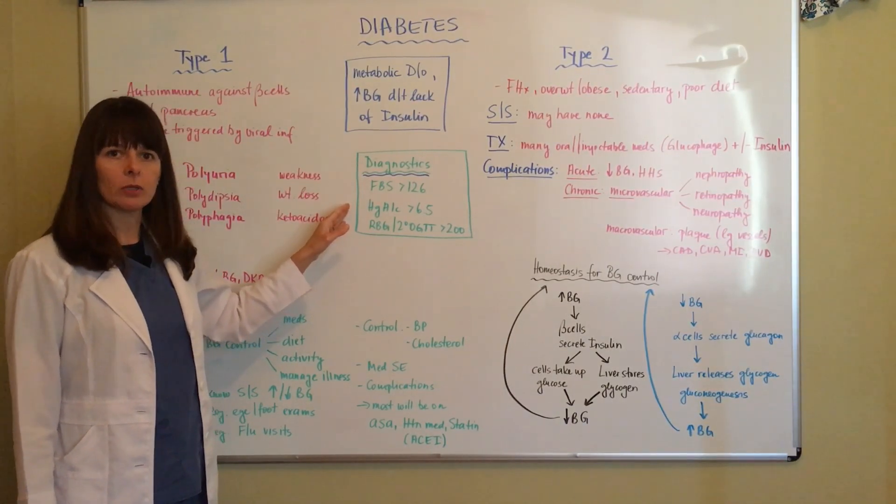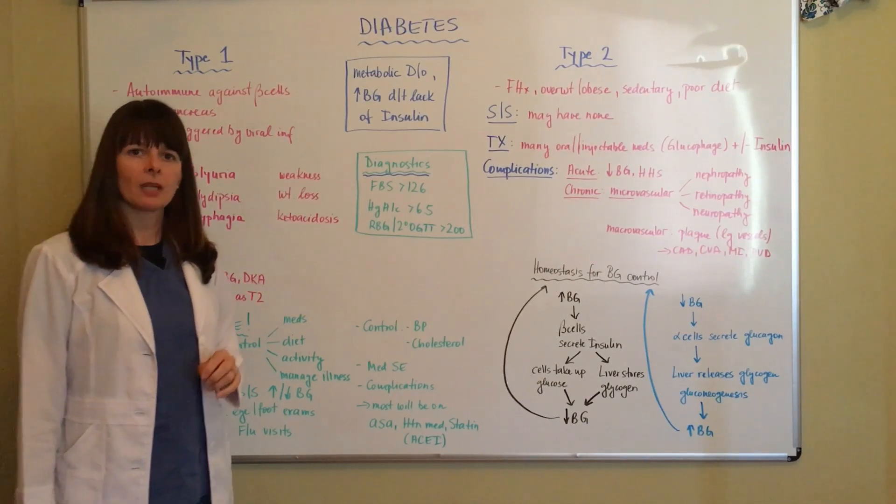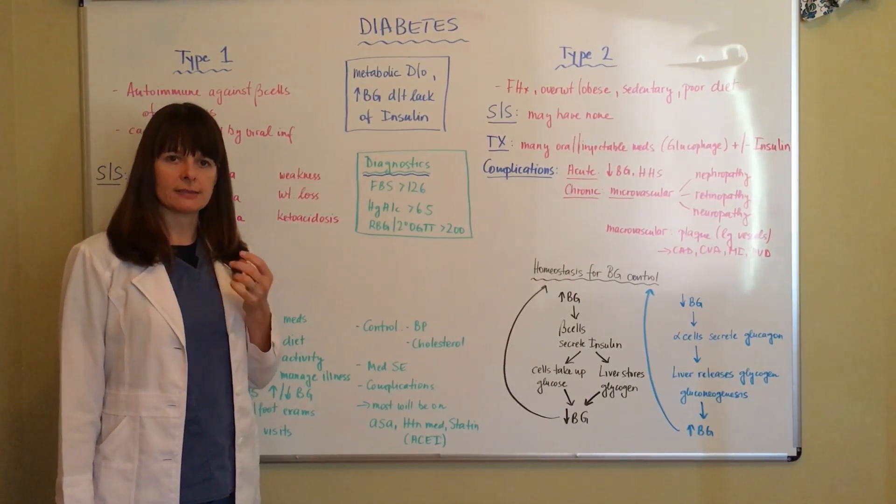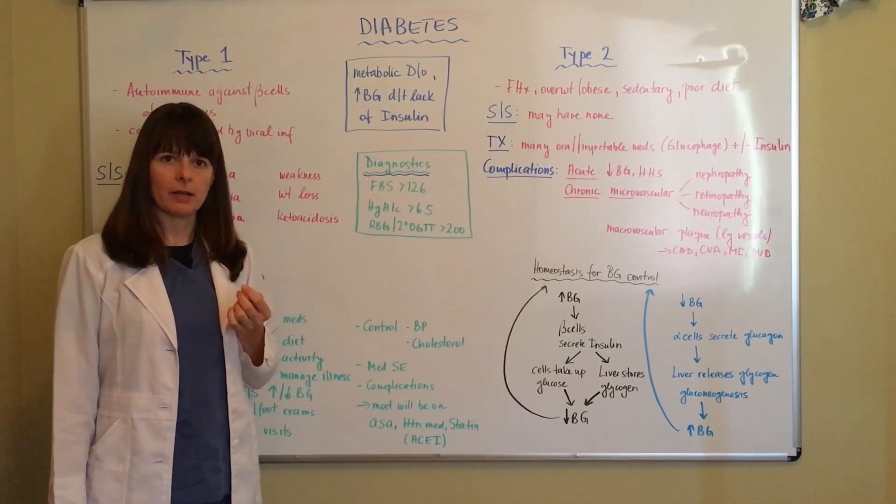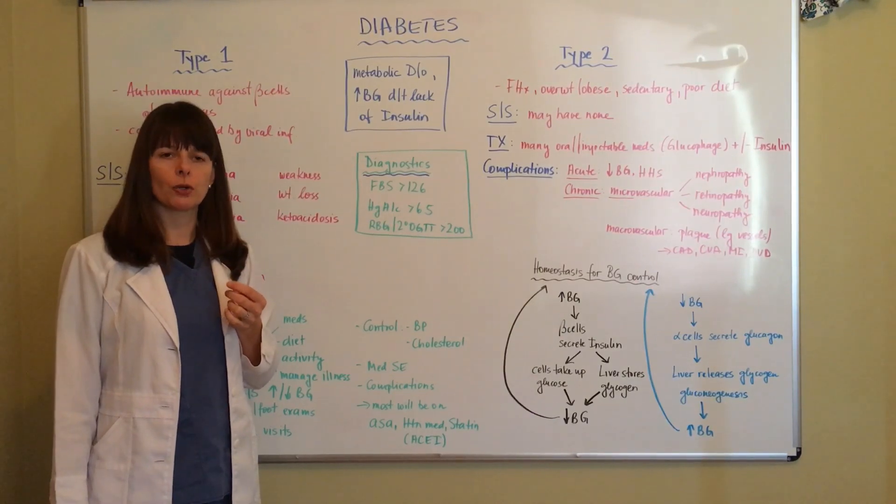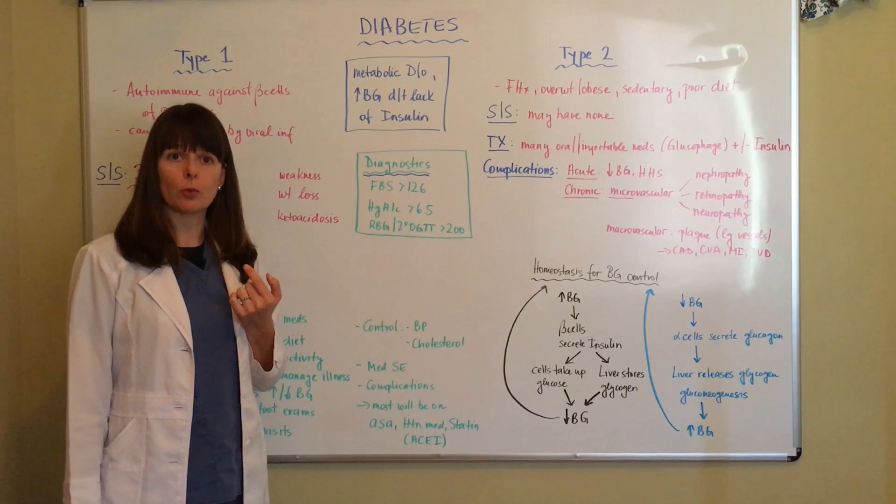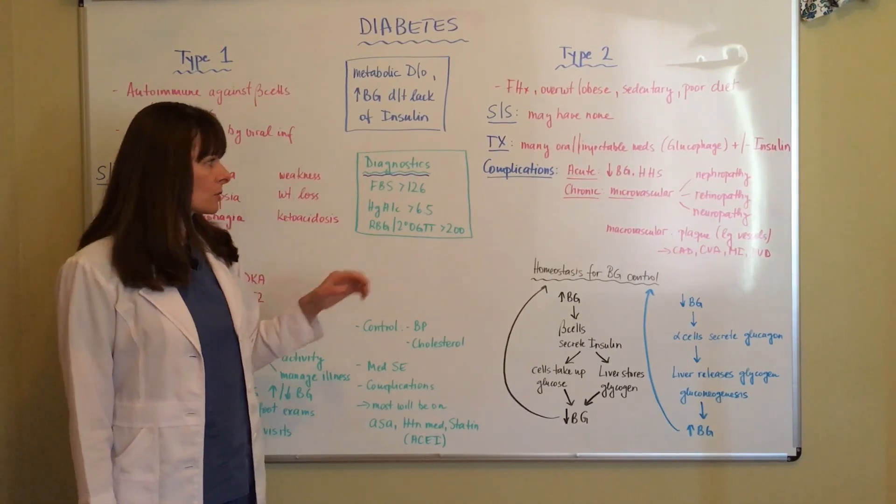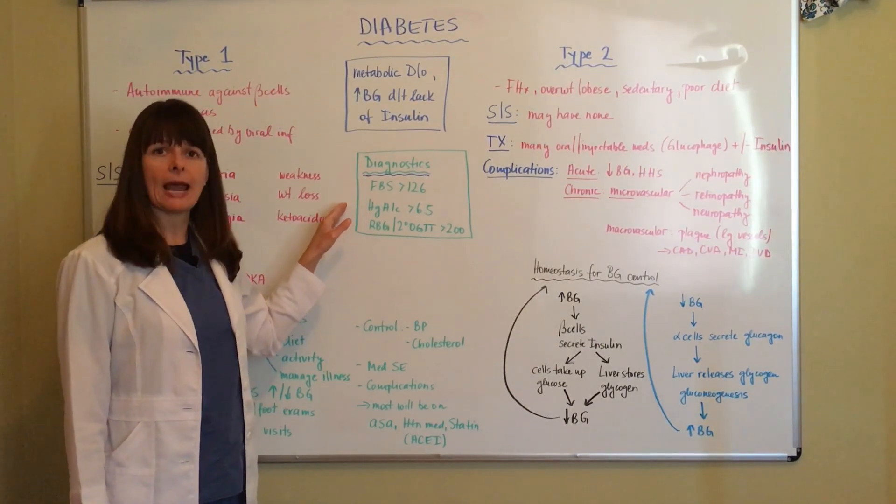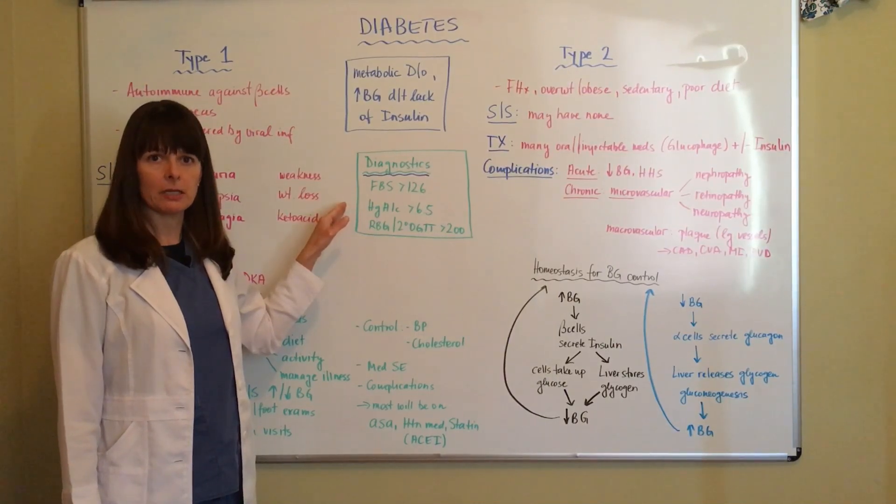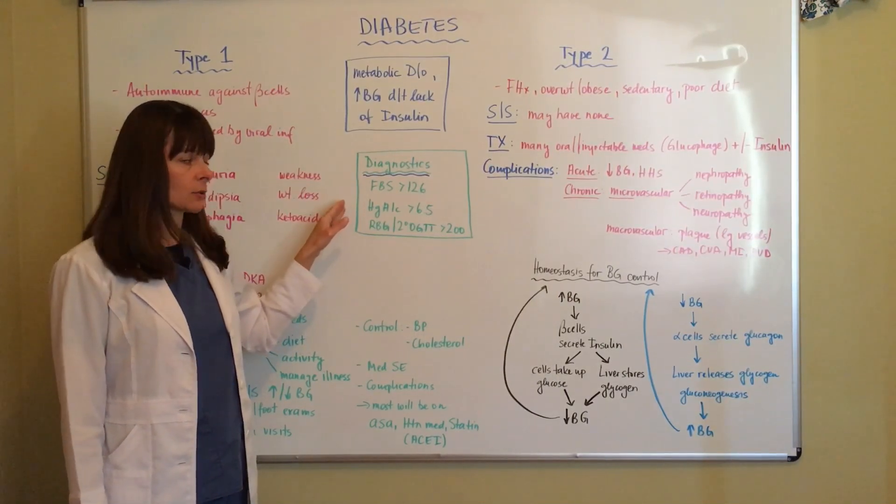Hemoglobin A1c greater than 6.5. Hemoglobin A1c is a blood test that monitors the molecule of A1c that's attached to the hemoglobin, to the red blood cell that measures the average blood sugar over that life cycle of the red blood cell, 120 days, three months. The hemoglobin A1c gives us a good average to see how well the patient has been managing their diabetes over the last several months or three months.